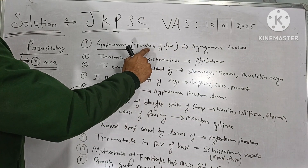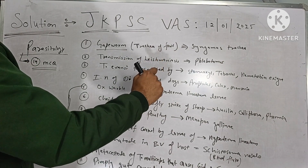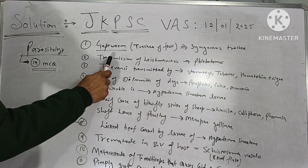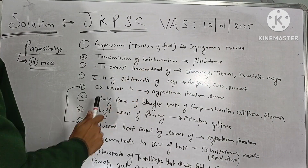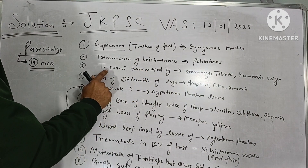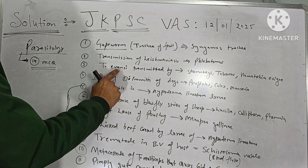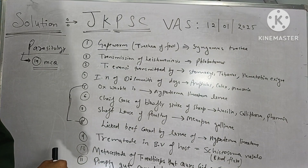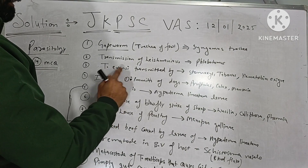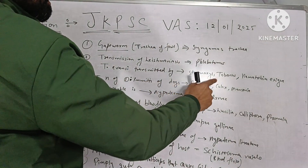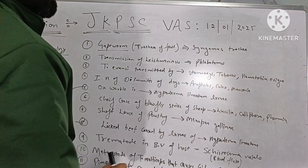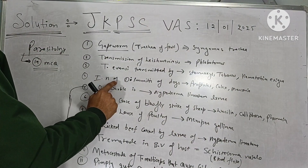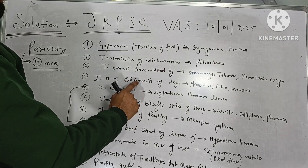Gape worm is a worm related with the trachea of the fowl and it is caused by Syngamus trachea. The second MCQ is transmission of Leishmaniasis and the third is transmission of Trypanosoma evansi. Leishmania transmission is via Phlebotomus, that is the sand fly, and surra is transmitted by Stomoxys, Tabanus, and Haematobia exigua.